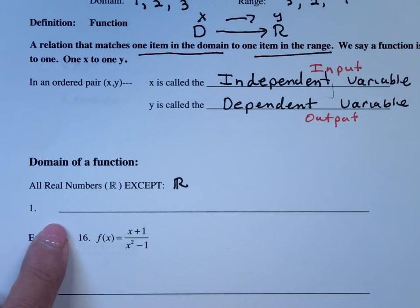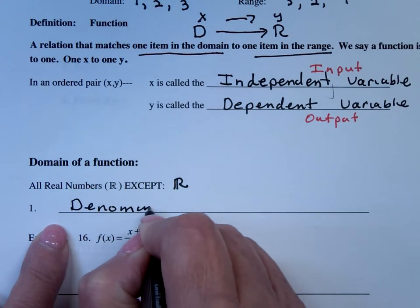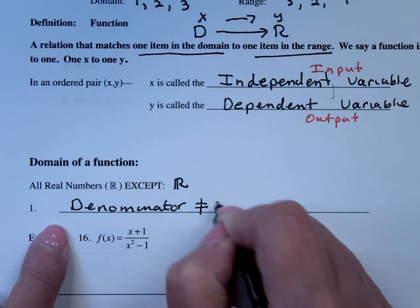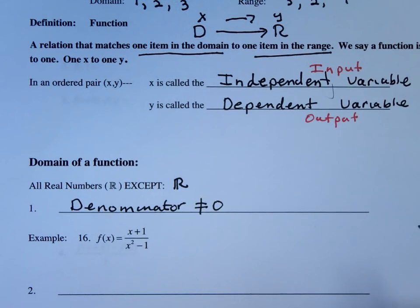Except, first thing we need to concern ourselves with is denominators. The denominator can't be zero. That's an exclusion. So any x value that makes the denominator zero would be excluded from the domain.